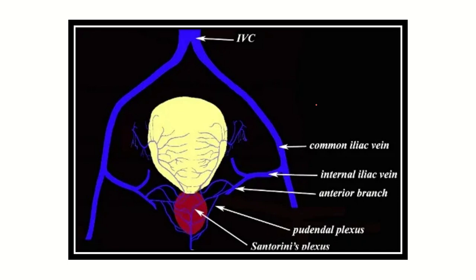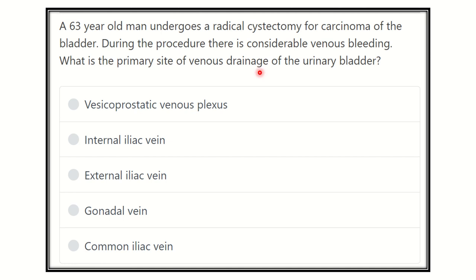Hi everyone, welcome to another question and answer session for the MRCS exam. A 63-year-old man undergoes a radical cystectomy for carcinoma of the bladder. During the procedure there is considerable venous bleeding. The question is: what is the primary site of venous drainage of the urinary bladder? The options are vesico-prostatic venous plexus, internal iliac vein, external iliac vein, gonadal vein, and common iliac vein.